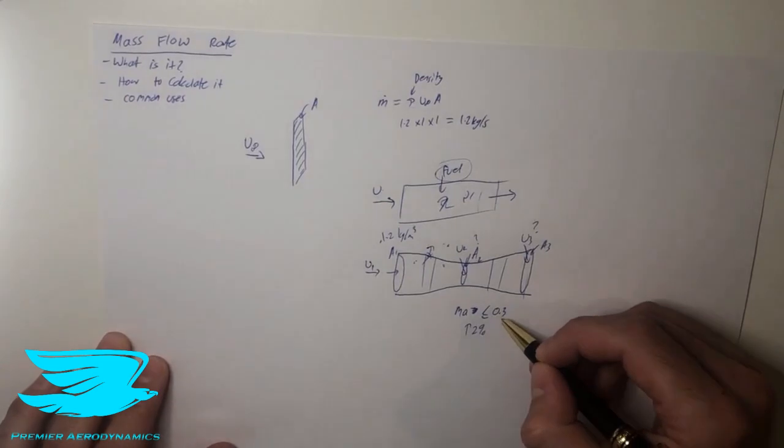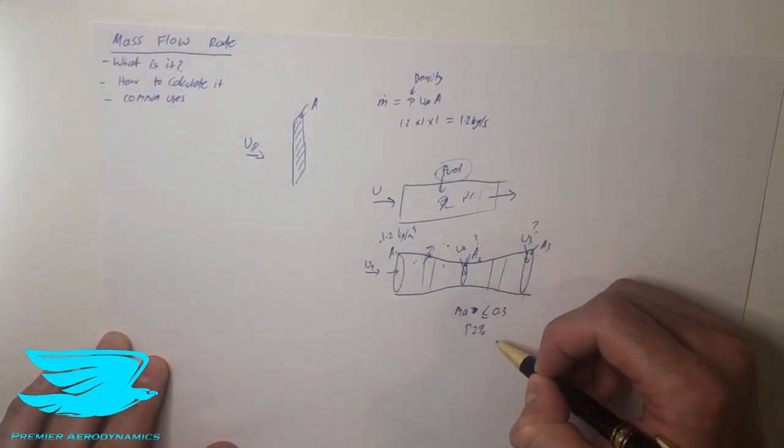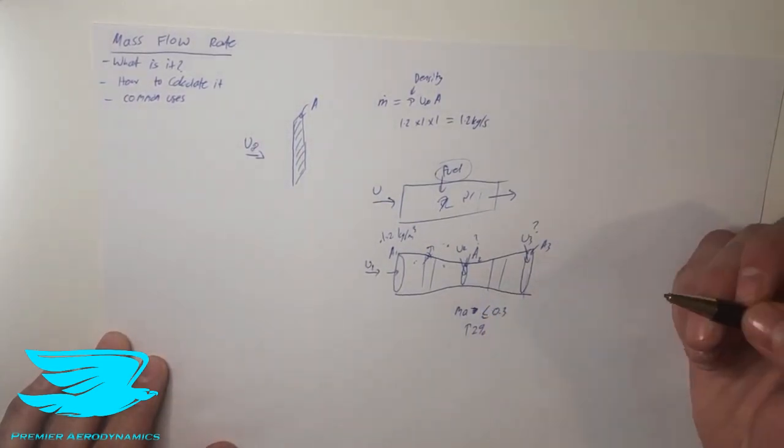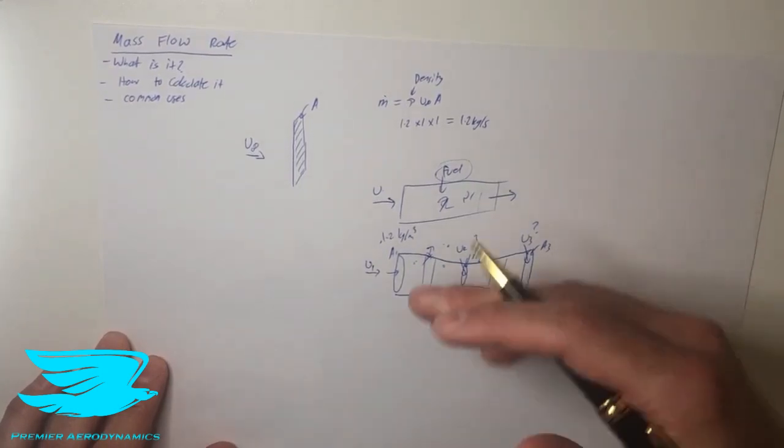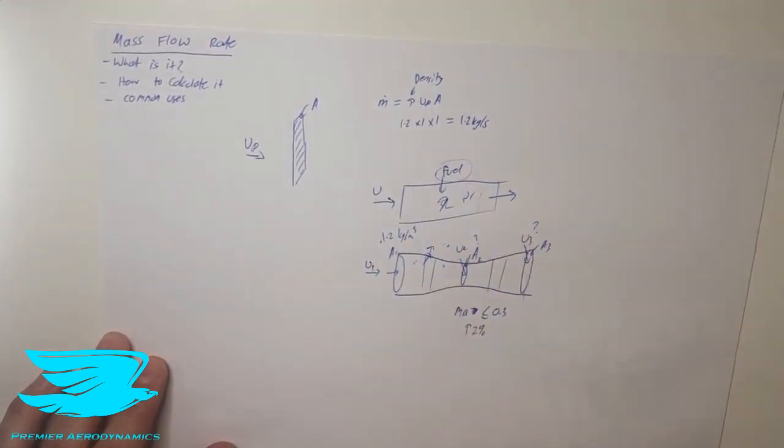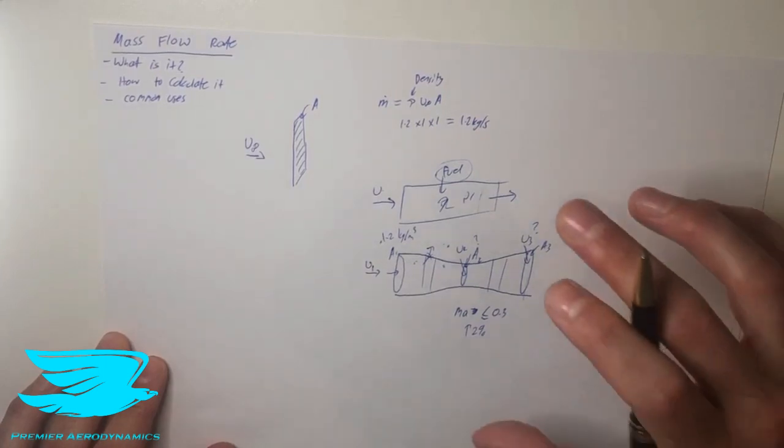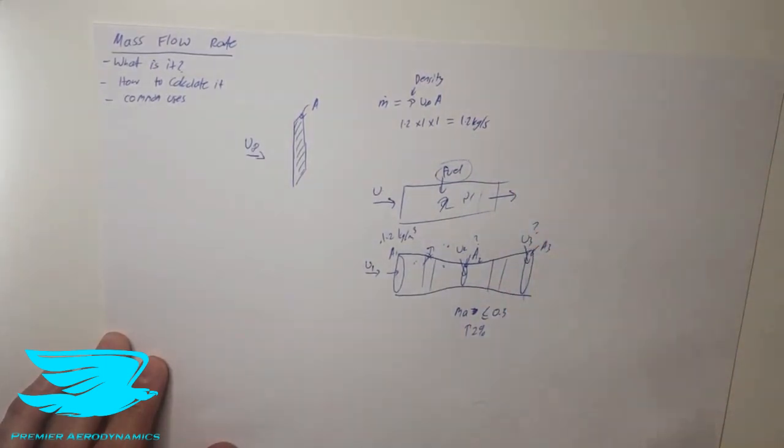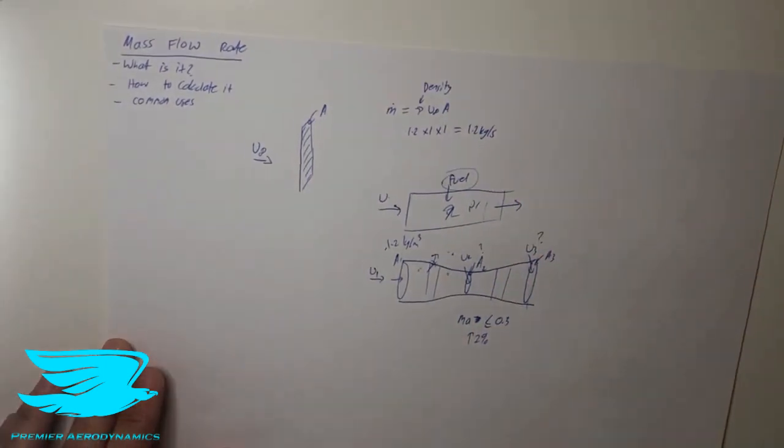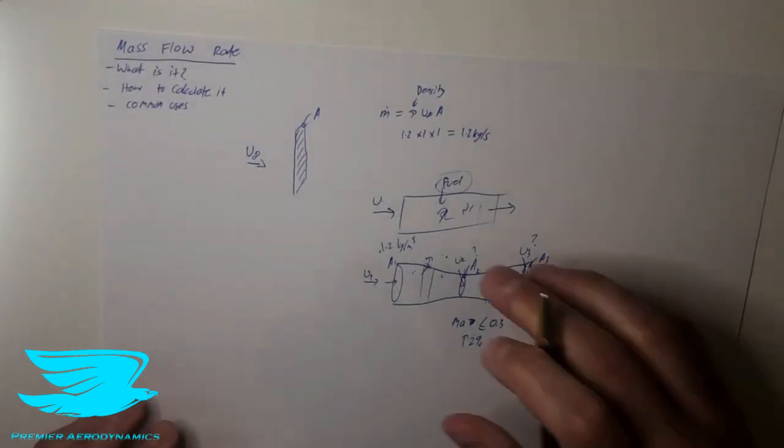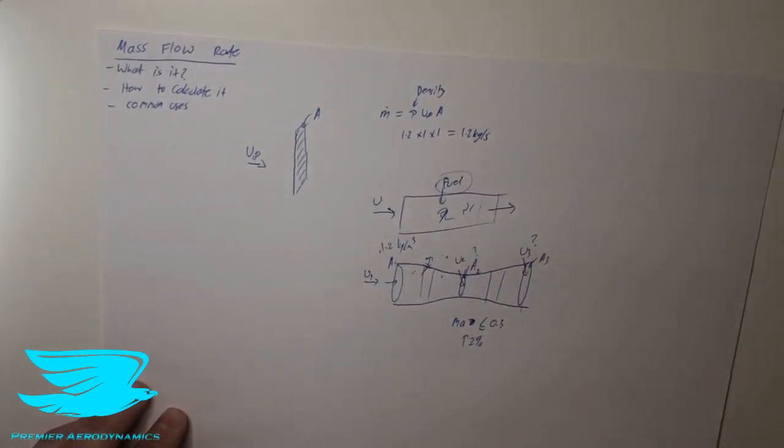If the Mach number increases above this, then we'll start to get a significant error in the density, 2% or greater and when we get to like Mach 1 for example, it just skyrockets. The errors become great. So we need to factor that in when we go to sonic flows and transonic flows. So let's come back to this converging diverging nozzle.